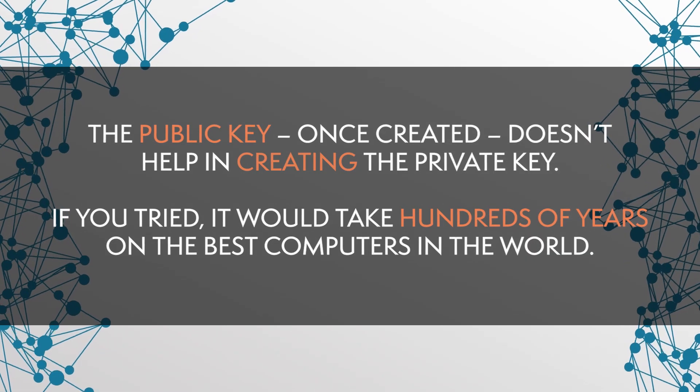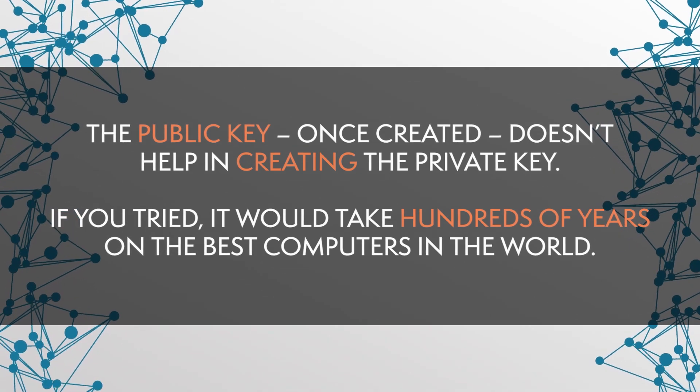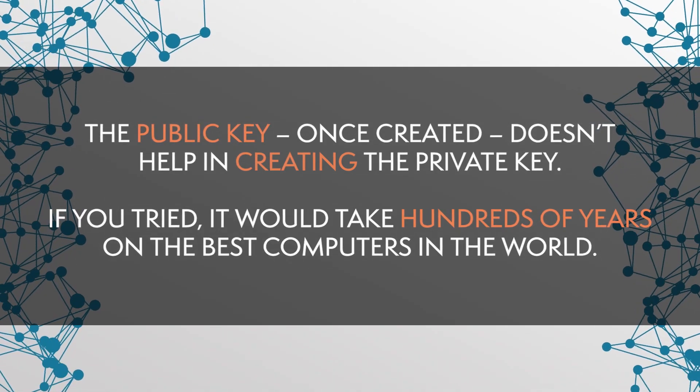Sadly, we still haven't found a perfect, bulletproof way of achieving this yet. Therefore, we have to rely on a more practical barrier: computing power. Asymmetric encryption relies on a complicated math problem. It is created to be so difficult that it takes a very long time to calculate — even the best computers we have in the world will not be able to calculate it quickly. Importantly, the public key, once created, doesn't help in creating the private key.